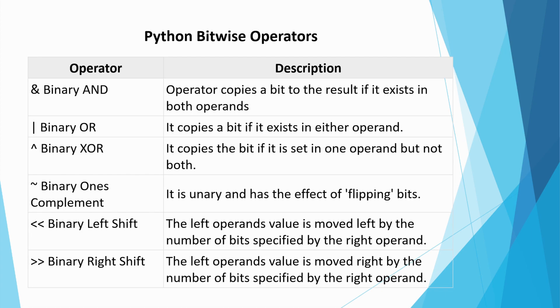Python binary operators include binary-and, binary-or, binary-xor, binary-once-complement, binary-left-shift, binary-right-shift.